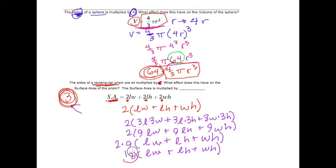So compare these two. How do we get from 2 to 18? We multiply by what? 9. So what that means is the surface area of the new prism is going to be 9 times bigger. Yaaaay.